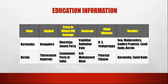The next state is Karnataka. The capital of Karnataka is Bengaluru. The party to which the CM belongs is Bharatiya Janata Party. The governor is Vajubhai Vala. The chief minister is B.S. Yediyurappa. The borders are Goa, Maharashtra, Andhra Pradesh, Tamil Nadu and Kerala.